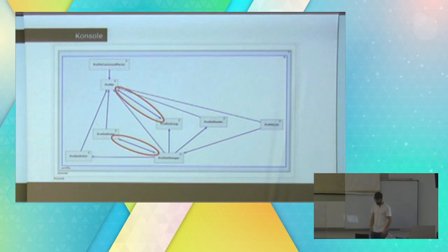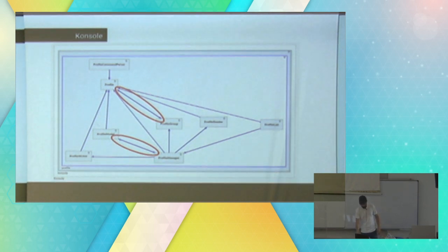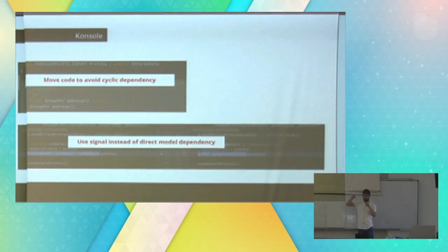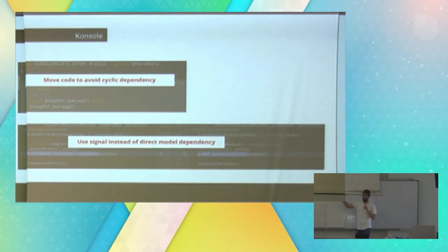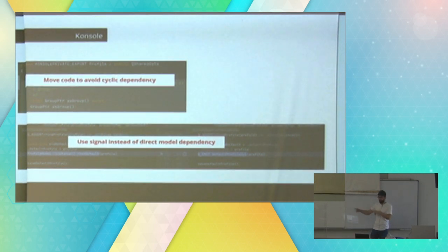This is a little bit more interesting. In order to remove the cycles, I needed to change the code a little bit. I have two cycles and I want to remove them to have a more natural architecture without cycles. In order to do that, I needed to move out some code to avoid having the extra dependency — move code to avoid cyclic dependency. That was the first thing I did in one component.